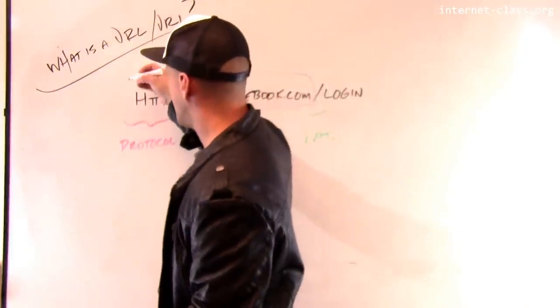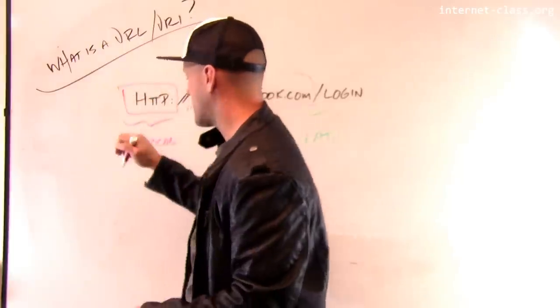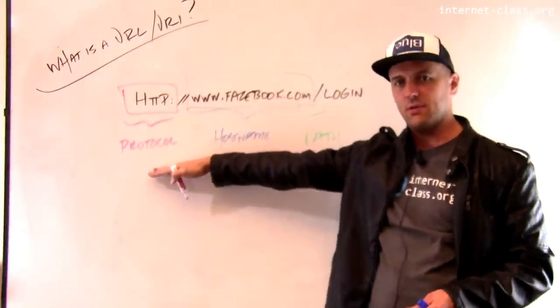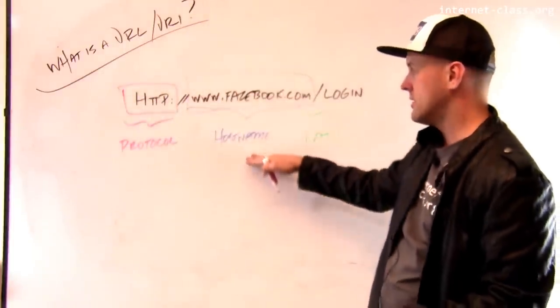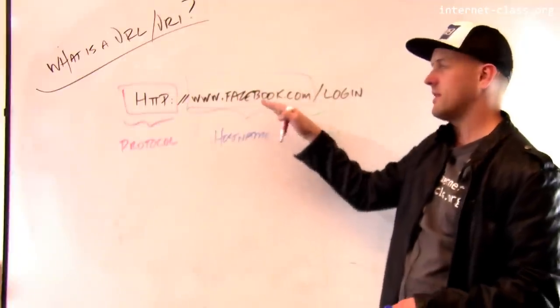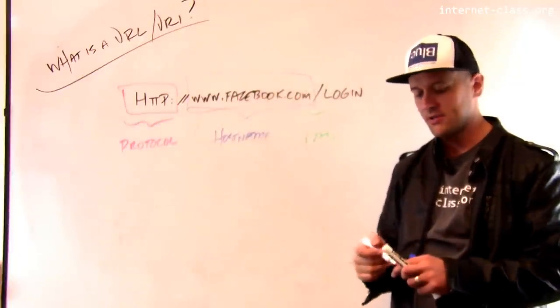So what this is saying is, I want to connect to, I want to retrieve this using the HTTP protocol from a computer whose name is www.facebook.com and I can translate that into an IP address.